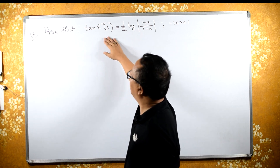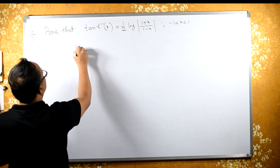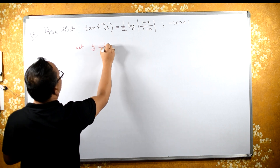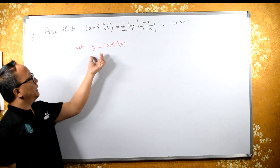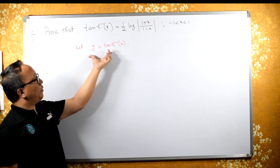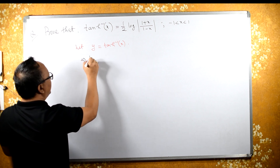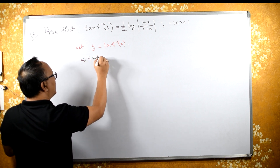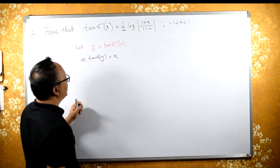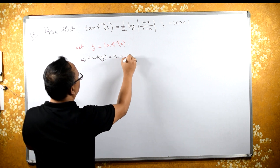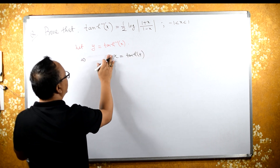Let's consider tanh⁻¹(x) equals y. This implies that if we apply tanh on both sides, tanh and tanh⁻¹ get cancelled, and we get x. Therefore, x equals tanh(y).